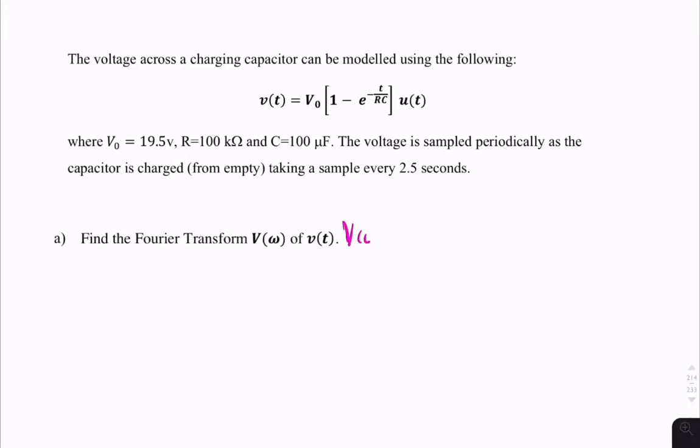V of omega is simply the integral from minus infinity to infinity, V of t, e to the minus j omega t dt. That's the definition of the Fourier transform.